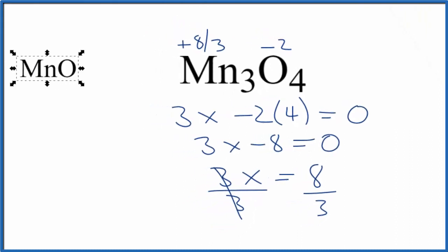Mn3O4, it's actually a compound made up of MnO and Mn2O3, manganese 2 oxide and manganese 3 oxide. And that's why we end up with this average oxidation state, because it's not just really one compound, it's these two compounds bonded together.